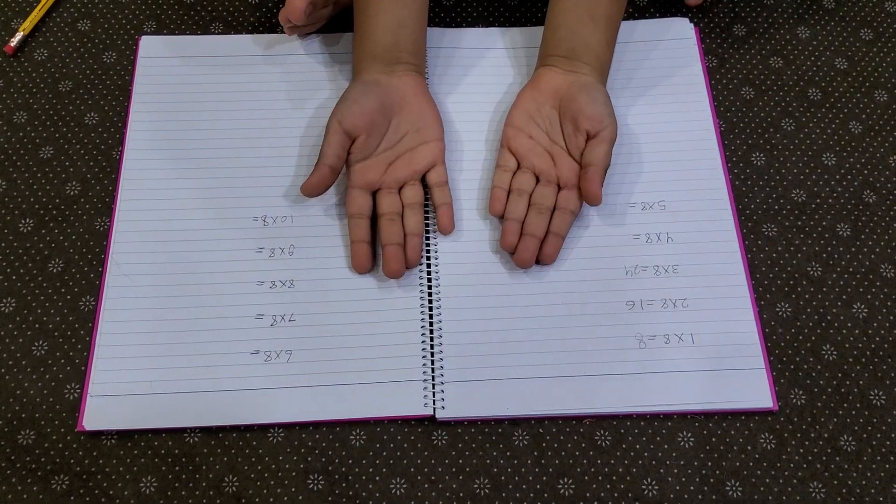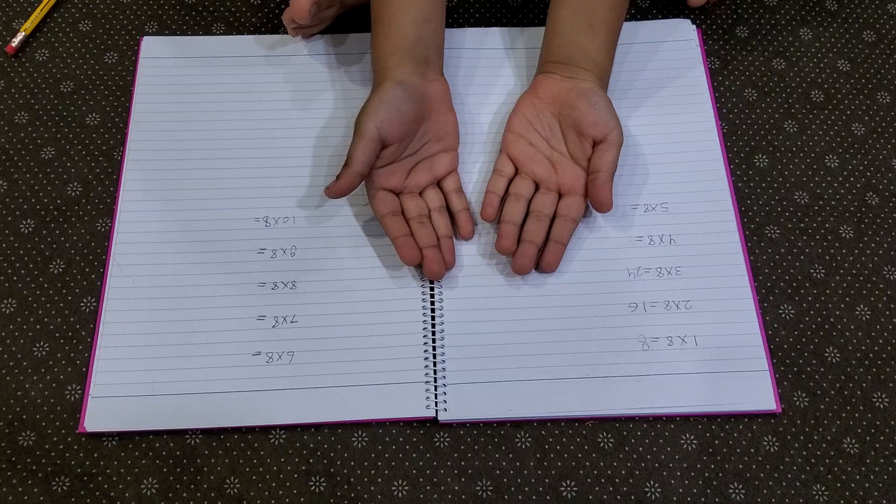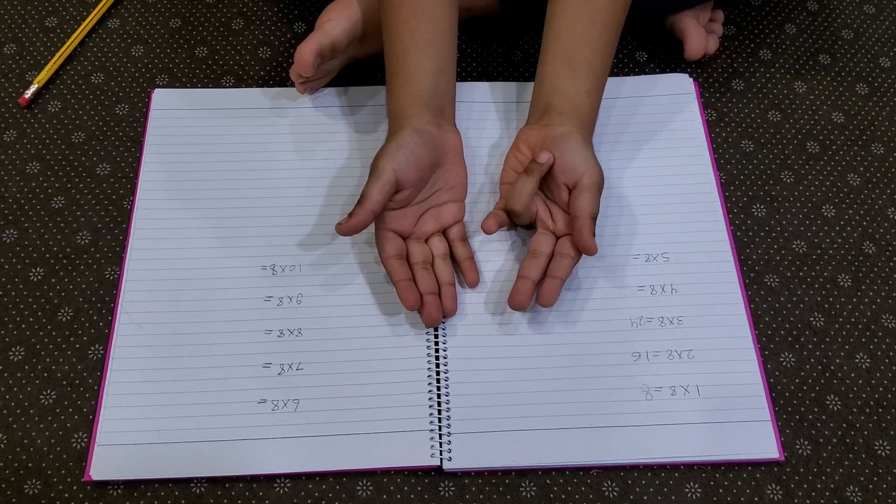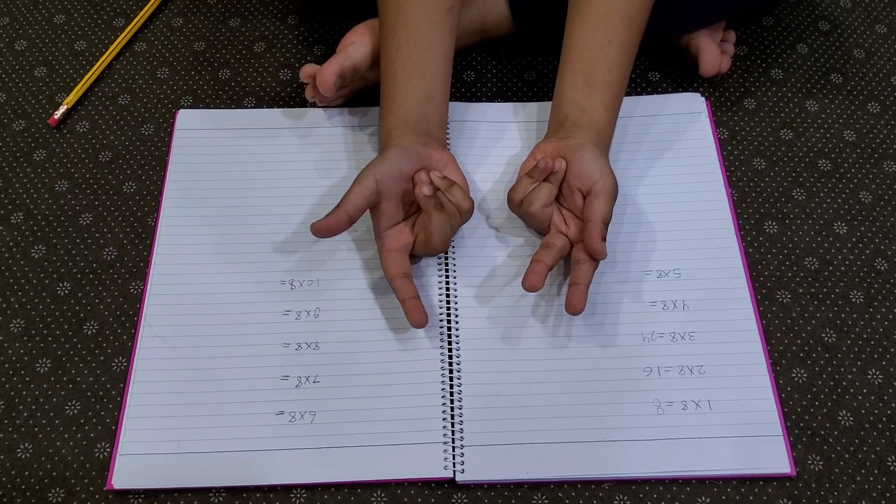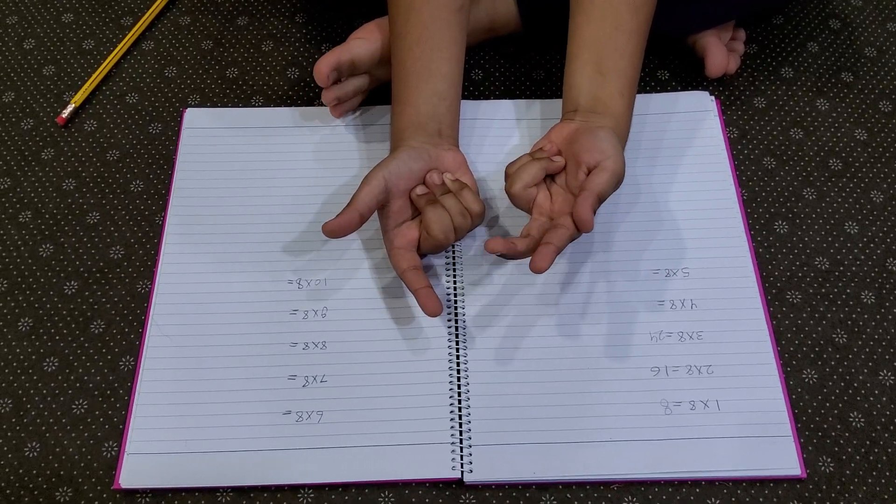Four multiplied by eight. So we're going to bend number four and four fingers after it. So it's going to be thirty-two.